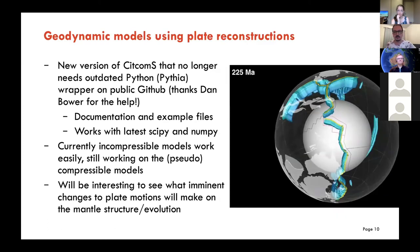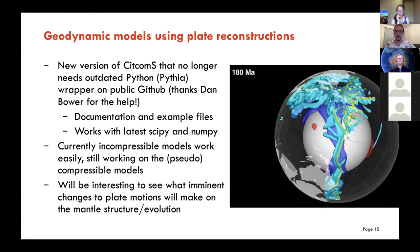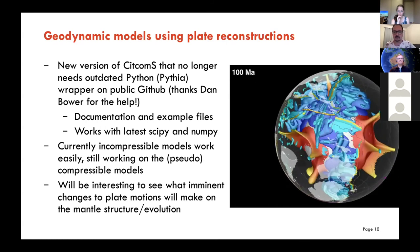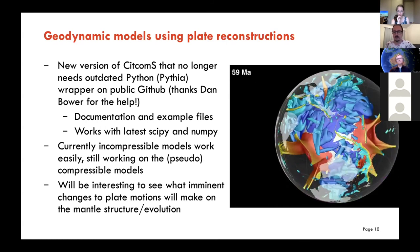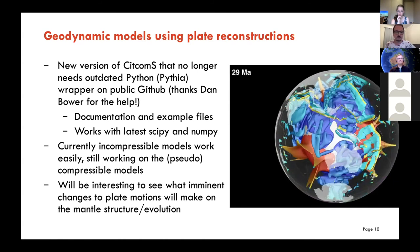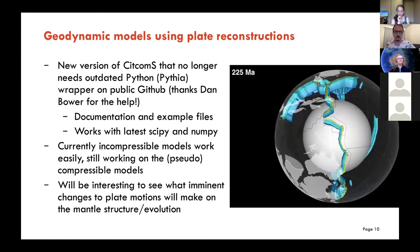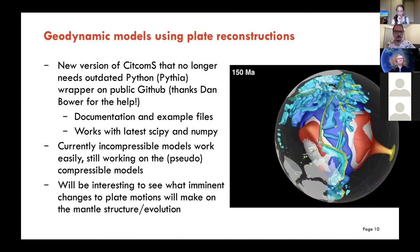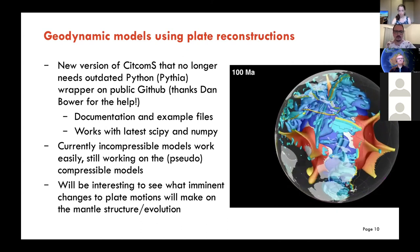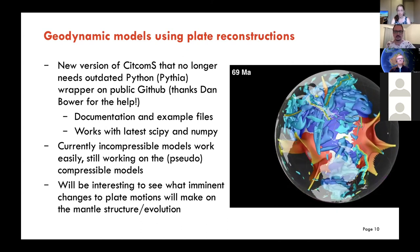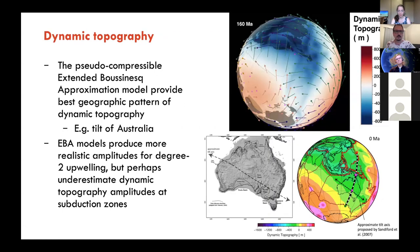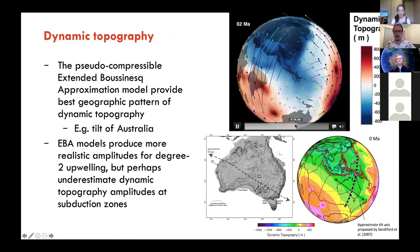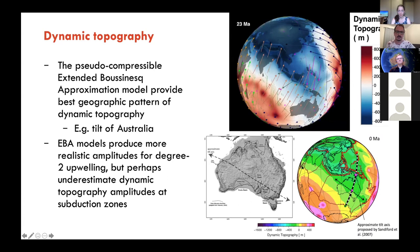The whole CitcomS slab assimilation workflow is now on the EarthByte GitHub. Dan Bauer has removed the Python wrapper, so it's pure C code now. We've worked to make it compatible with the latest SciPy and NumPy, with lots of documentation and example files. Incompressible models work best currently, with more work ongoing on the pseudo-compressible models, which have been fruitful in reproducing regional patterns of dynamic topography.